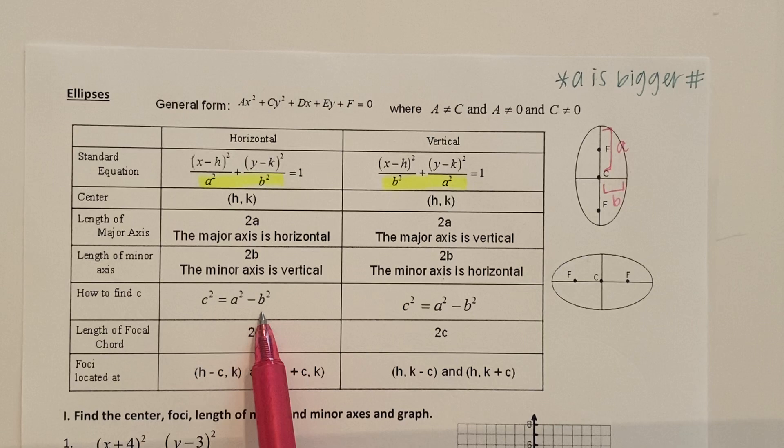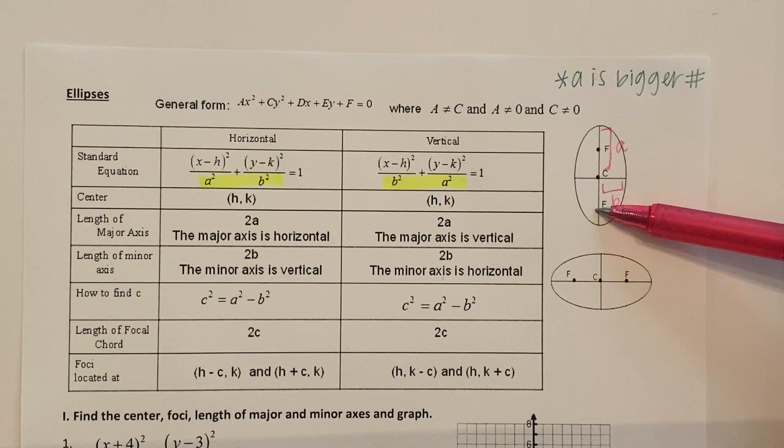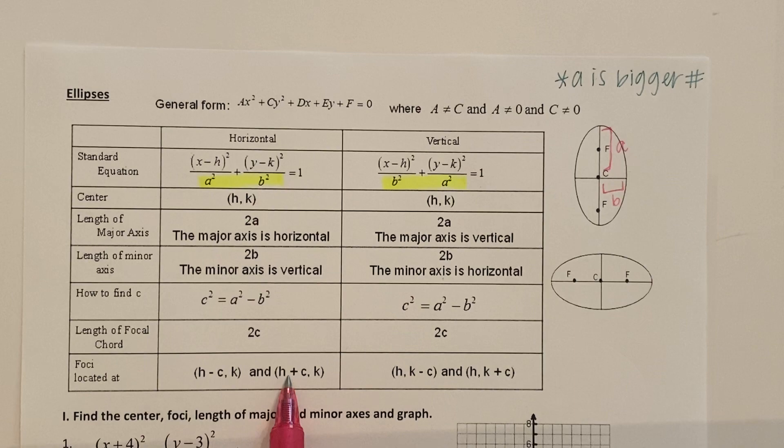Oh did you say Pythagorean theorem? You would be correct. The only difference is it's not plus. So once you get C that's the length from the center to the foci and then to figure out where it is if it's horizontal you add it and subtract it to the x value. If it's vertical you add it and subtract it to the y value.